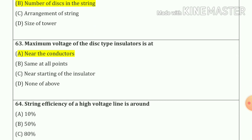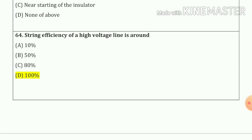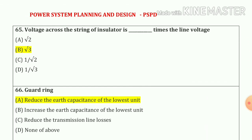Question number 63: maximum voltage of the disc type insulator is at near the conductor — option number A. Question number 64: string efficiency of a high voltage line is around 100%. Question number 65: voltage across the string of insulators is root 3 times the line voltage — option number B.